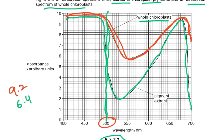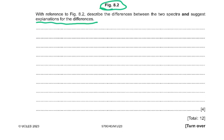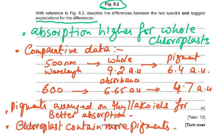There is a whole table in the mark scheme — do have a look at it to learn from it. The explanations the mark scheme gives: absorption higher for whole chloroplast throughout, with comparative data such as 500 nm: 9.2 AU vs 6.4 AU, and at 600 nm: 6.65 AU for one curve. Reasons: pigments arranged on thylakoids for better absorption in whole chloroplasts; chloroplasts contain more pigments, whereas only a few were extracted.